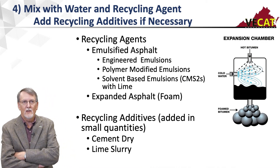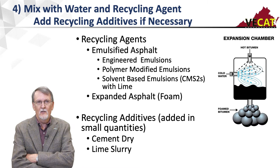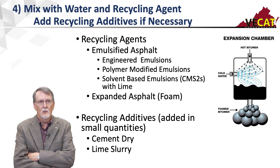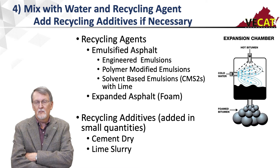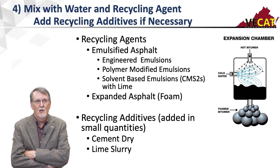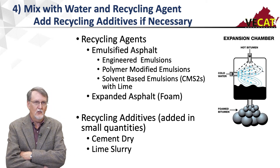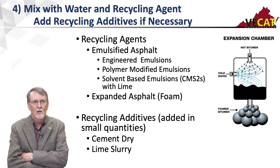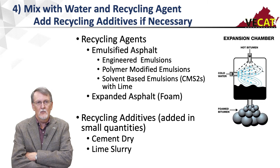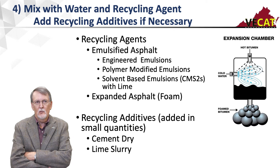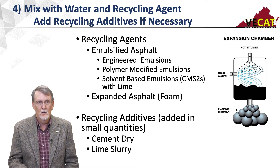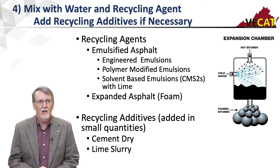The mix is mixed with water and recycling agents, with recycling additives added if needed. Recycling agents include emulsified asphalt and expanded asphalt or foam. Emulsified asphalts can be engineered emulsions — typically CSS-1 emulsions that have been modified to match your conditions — or polymer-modified emulsions. Occasionally CMS-2, a solvent-based emulsion with lime added, is used when you want to stockpile the mix for a while; you wouldn't use those if placing immediately. Foamed asphalt is also used as a recycling agent.